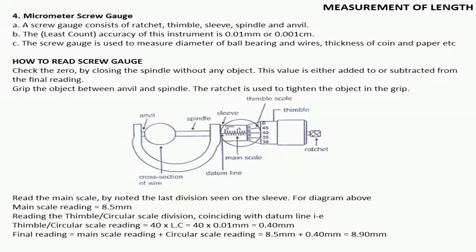Dear student, now how to read the screw gauge? Check the zero error by closing the spindle without any object. If there is any zero error, its value is either added or subtracted from the final reading. Grip the object between anvil and spindle, and the ratchet is used to tighten the object into the gap.